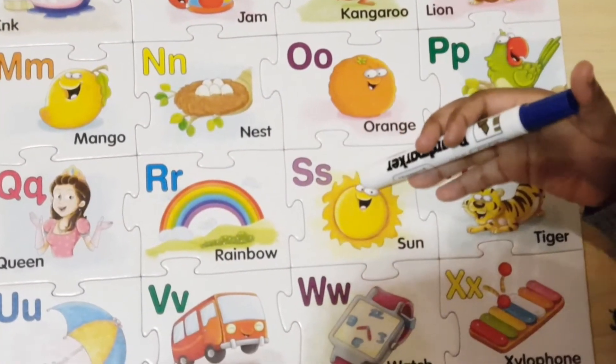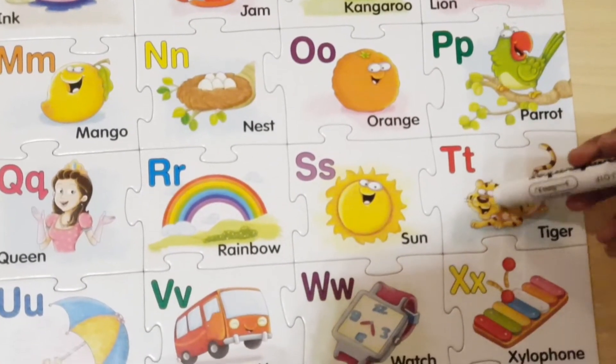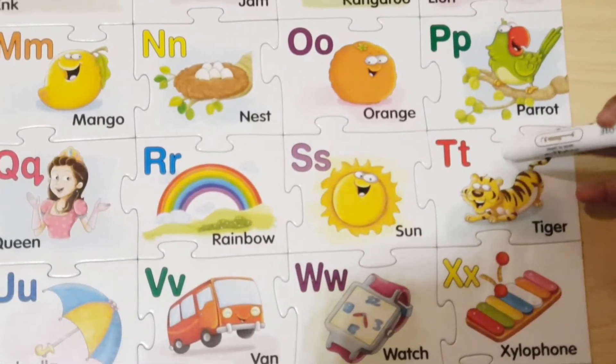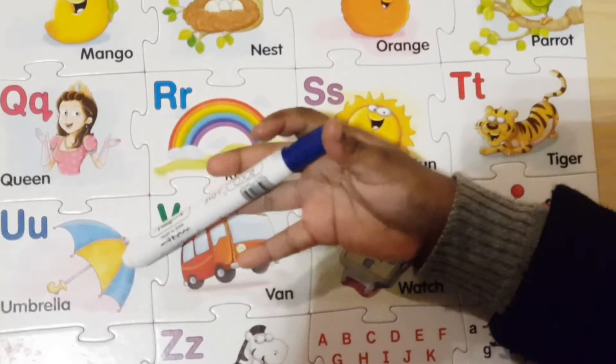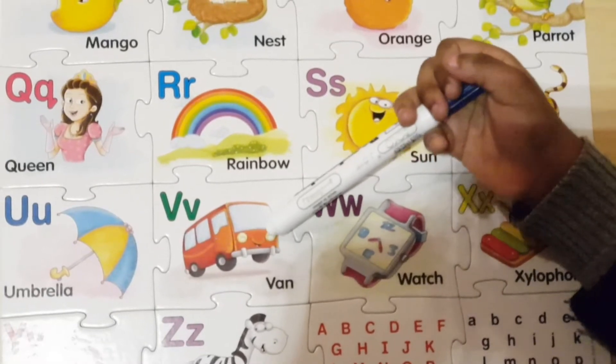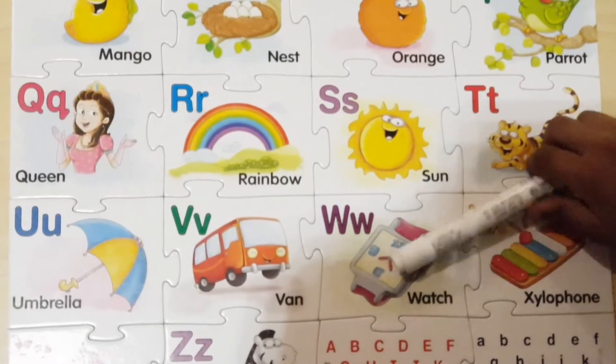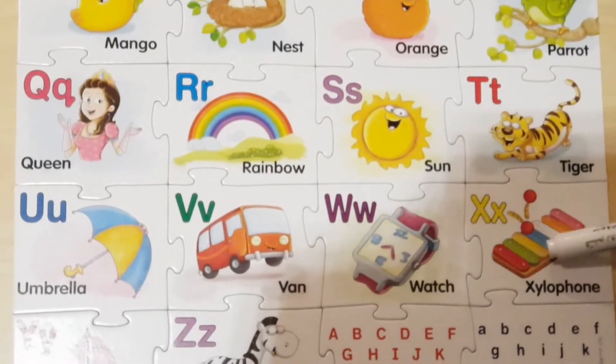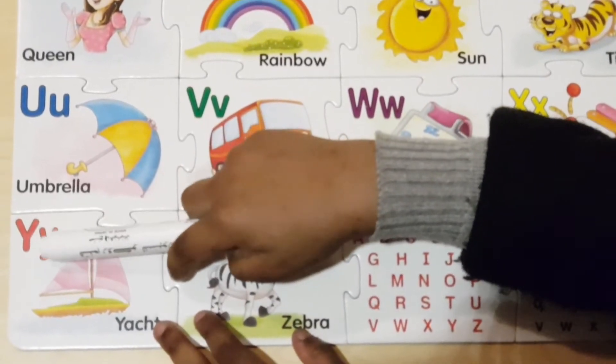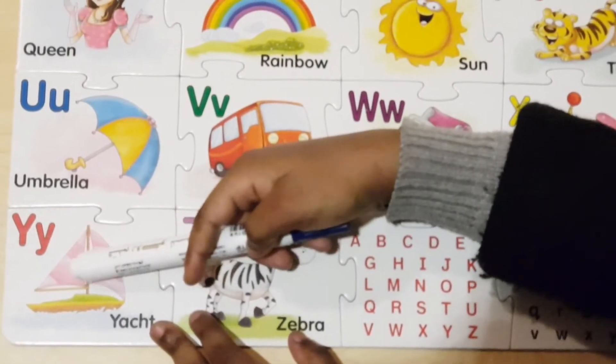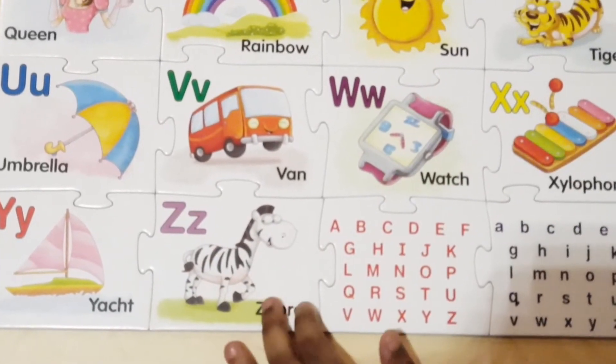Q sounds Q as in Queen. R sounds R as in Rainbow. S sounds S as in Sun. T sounds T as in Tiger. U sounds U. V sounds V. W sounds W. X sounds X. Y sounds Y. Z sounds Z as in Zebra. Good job!